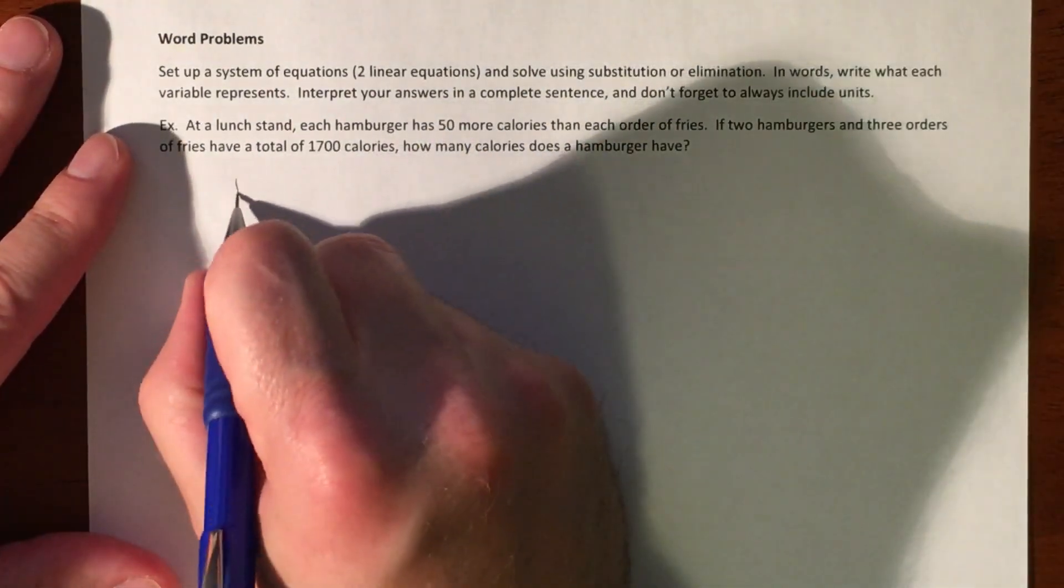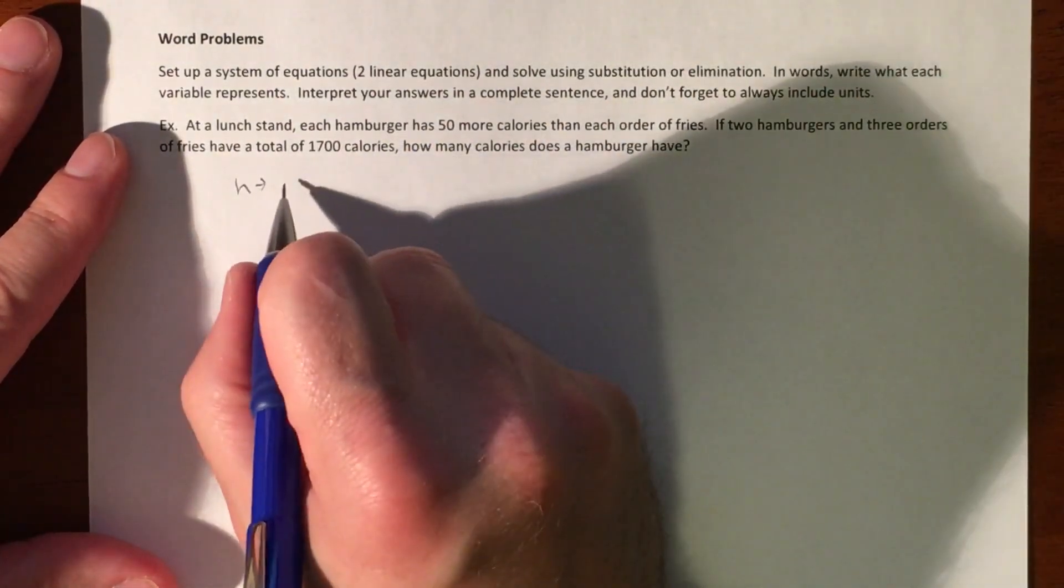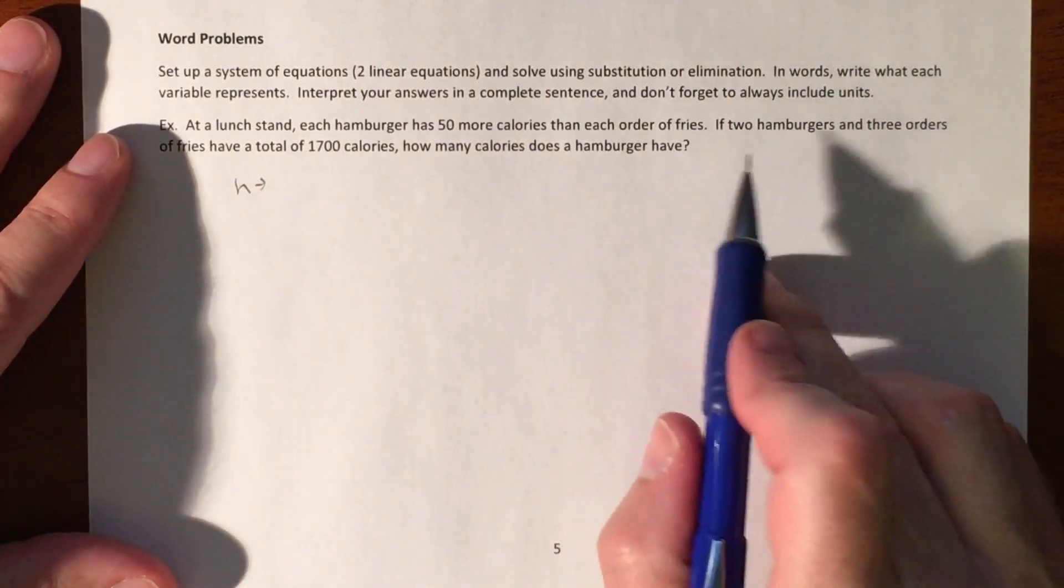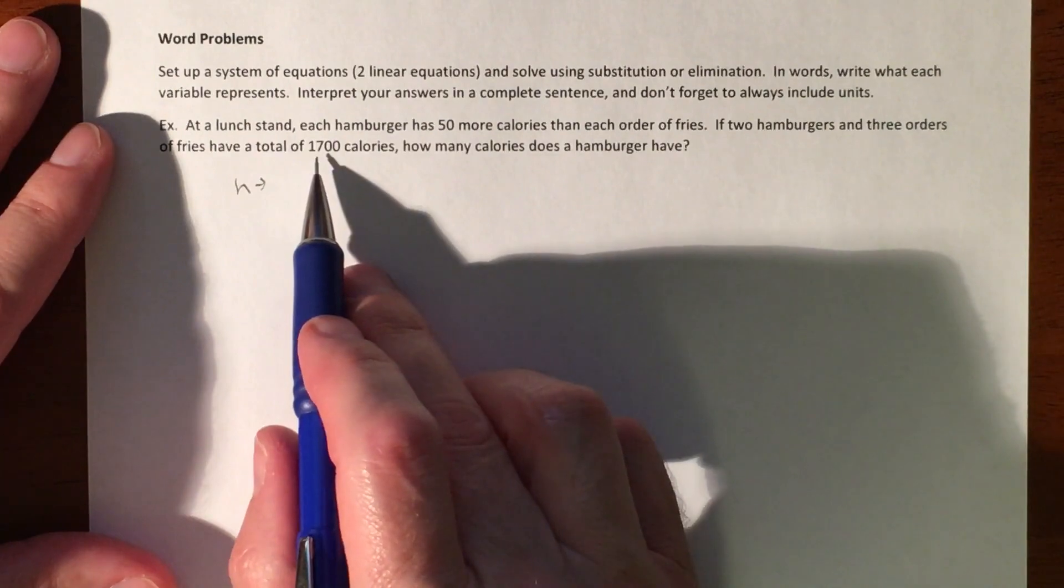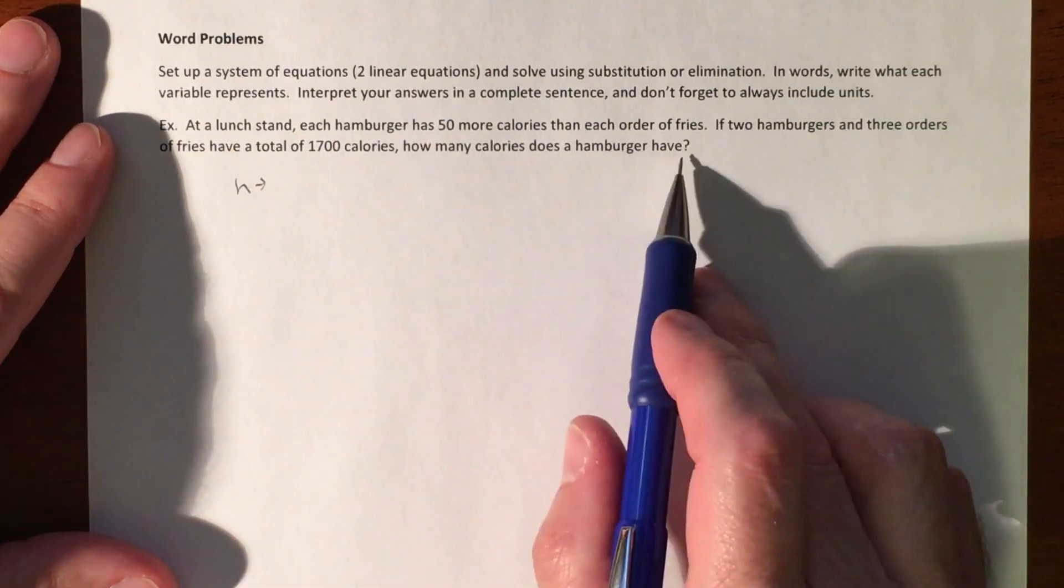So we will classify our variables. Well, we'll come back to that in a second. If two hamburgers and three orders of fries have a total of 1,700 calories, how many calories does each hamburger have?